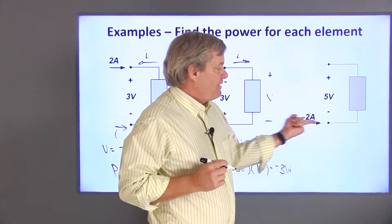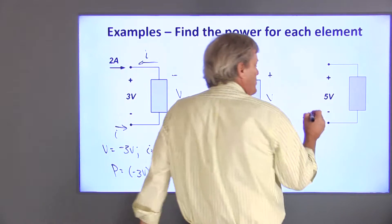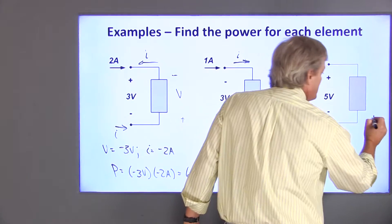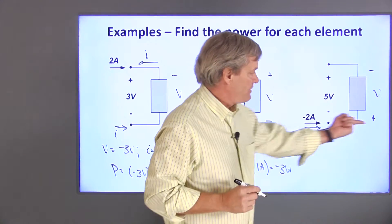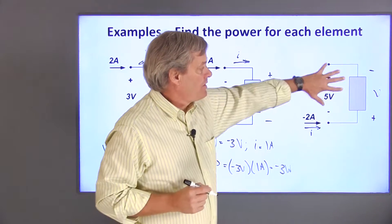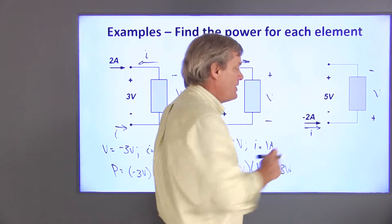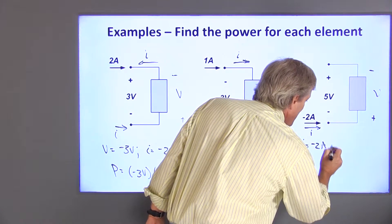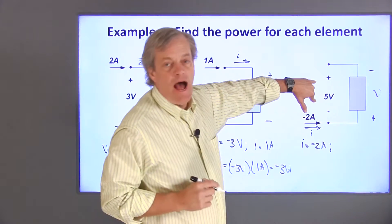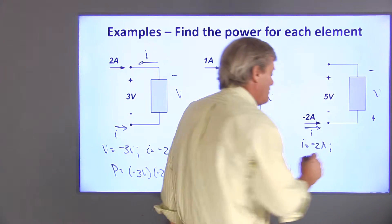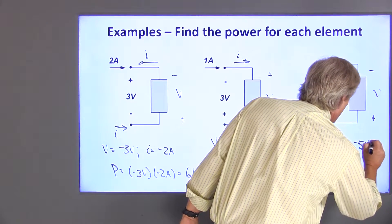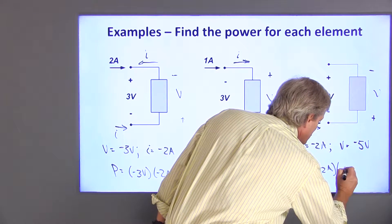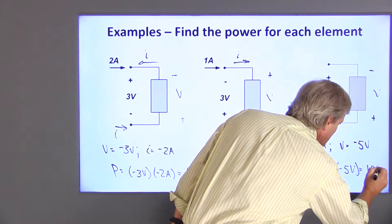Finally, I have negative 2 amps going this direction. I'm going to choose this to be my positive current direction. That means that this has to be my voltage polarity — positive current enters the positive voltage terminal, regardless of the actual polarities and current directions. This current is in the same direction as the assumed positive direction, so I is minus 2 amps. This voltage polarity is the opposite of the actual polarity, so I have to change sign on voltage, and V is equal to negative 5 volts. Power is negative 2 amps times negative 5 volts, which is positive 10 watts.